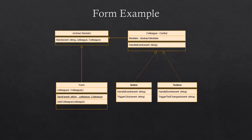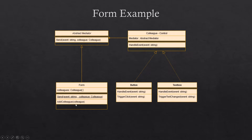Let's check the diagram before going to implementation. We have the abstract mediator — the central unit — it has a Send method which accepts an event and a colleague. The colleague is the control; it has a reference to the mediator and a method called HandleEvent which takes the event. Every control can handle the event. The form is an implementation of the mediator; it holds a list of colleagues, an Add method for adding controls, and the Send method.